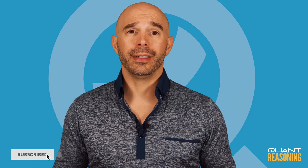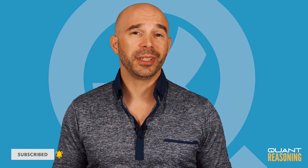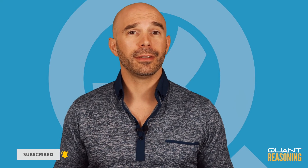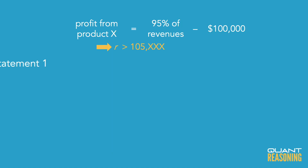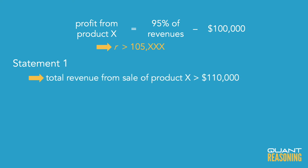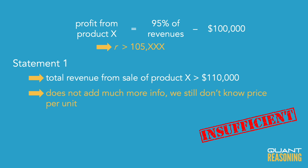As I'm reading statement one, I'm thinking I should have started with this one because it doesn't have a chance of being sufficient on its own. We already knew revenues were more than something above $105,000, so saying it was more than $110,000 isn't really adding much value. Without knowing the price per unit — it could be a penny or a million dollars — I have no way of knowing how much each unit was sold for, and therefore can't make any inferences about the number of units sold. So I'll go with answer choice B.